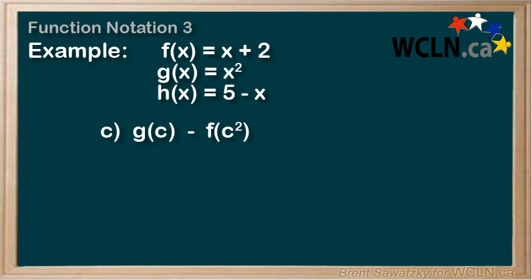c. g(c) - f(c²). So we are using two functions, g and f, and we're subtracting them. So g(c) - f(c²) equals the g function minus the f function. And then we put the c in the first function as specified.